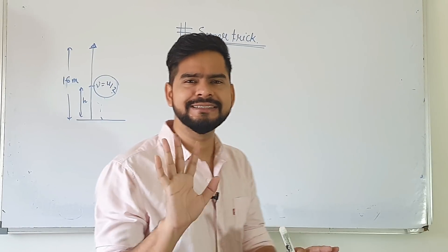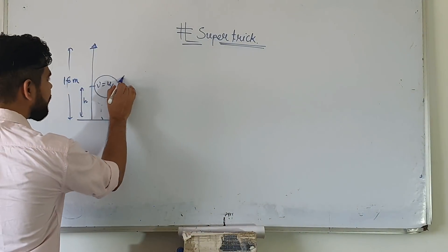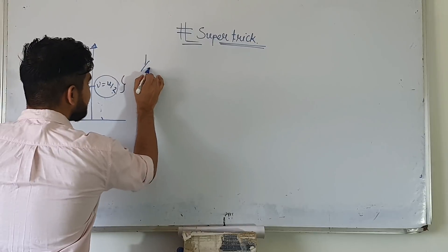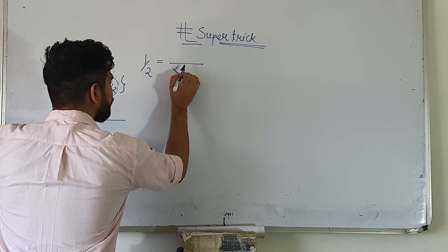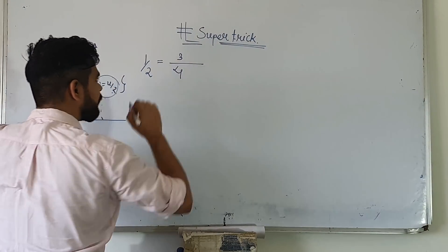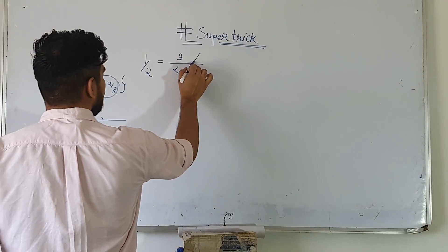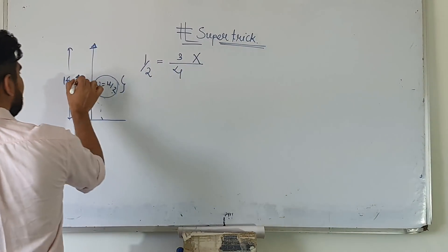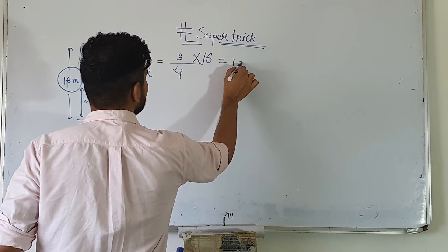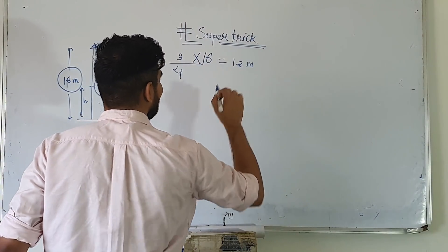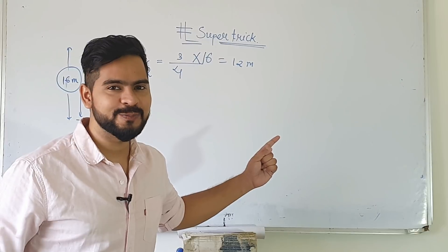So here is the trick. The keyword is 'half'. In the denominator, when you see 'half', simply apply it. Your answer is going to be 12 meters. That's the child party super trick — no need to do anything else!